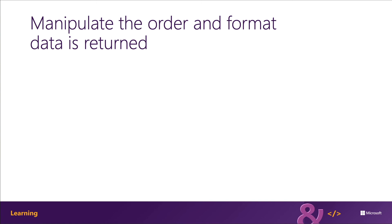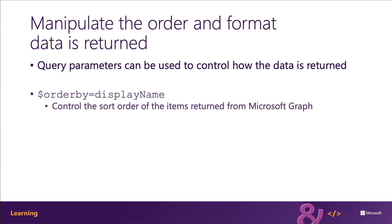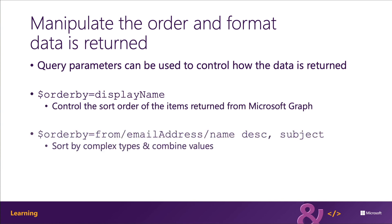Another powerful use of query parameters is to control how the data is returned in the response to a request. Some services may or may not return data in ascending order by default. The order by parameter enables developers to let the data from Microsoft Graph be pre-sorted. By default data is returned in ascending order, but you can add the DESC keyword after the property to sort in descending order. It also supports sorting by multiple fields by separating each field with a comma.